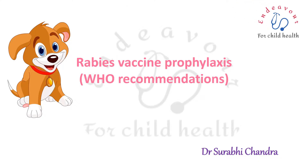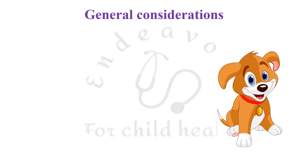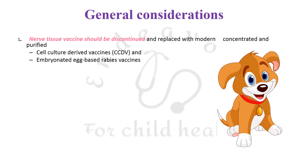One or two cases of rabies keep coming to the OPD every now and then, and there is a lot of confusion as to what to do, where to send, and what not to do. So I decided to discuss the WHO recommendations regarding rabies vaccine prophylaxis in this video. The general principle is that the nerve tissue vaccine should be discontinued and replaced with modern concentrated and purified cell culture-derived vaccines or embryonated egg-based rabies vaccines as per updated WHO guidelines.